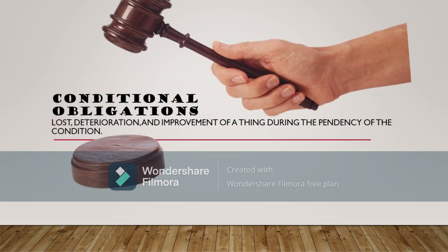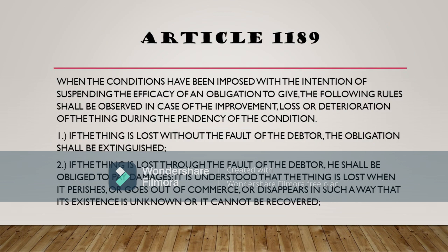So next, puntahan natin ang conditional obligations — loss, deterioration, and improvement of a thing during dependency of the condition. It answers what are the rules. The rules are under Article 1189. When the conditions have been imposed with the intention of suspending the efficacy of an obligation to give, the following rules shall be observed in case of improvement, loss, or deterioration of the thing during dependency of the condition.